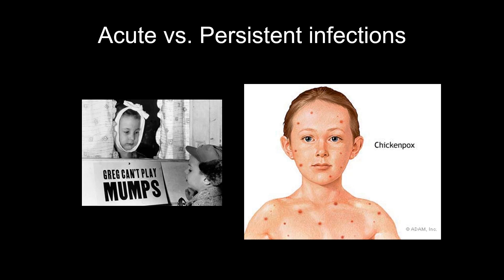Persistent infections: chronic means you continue to have symptoms and continue to shed virus for a long time — you're constantly producing more virions. An example is hepatitis B and C. A latent infection is like chicken pox: you get it, shed the virus, get better, but the virus is still hiding in you — you stop shedding it, but it can come back. With chicken pox, it hides in sensory ganglia of the nervous system. The difference: chronic means constantly shedding virus; latent means you shed it, stop, and then start again later when your immune system weakens. Other examples of latent infection: herpes simplex types 1 and 2, and varicella zoster.